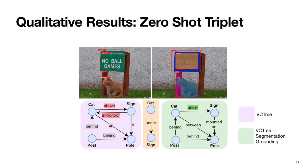Here, we show an example of zero-shot relation prediction. Our model successfully detects the relation between cat and sign, whereas the baseline fails to do so.